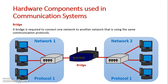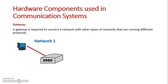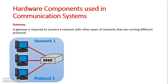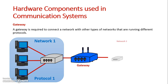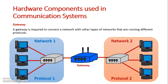A gateway is pretty much the same thing, though one major difference: a gateway actually allows devices or networks running different protocols to communicate with each other. Here I have network one running protocol one, but instead of using a bridge, I'm going to use a gateway. This gateway allows me to communicate with network two, which is running a different protocol — protocol two. In this scenario, I would not be able to use a bridge; I have to use a gateway.